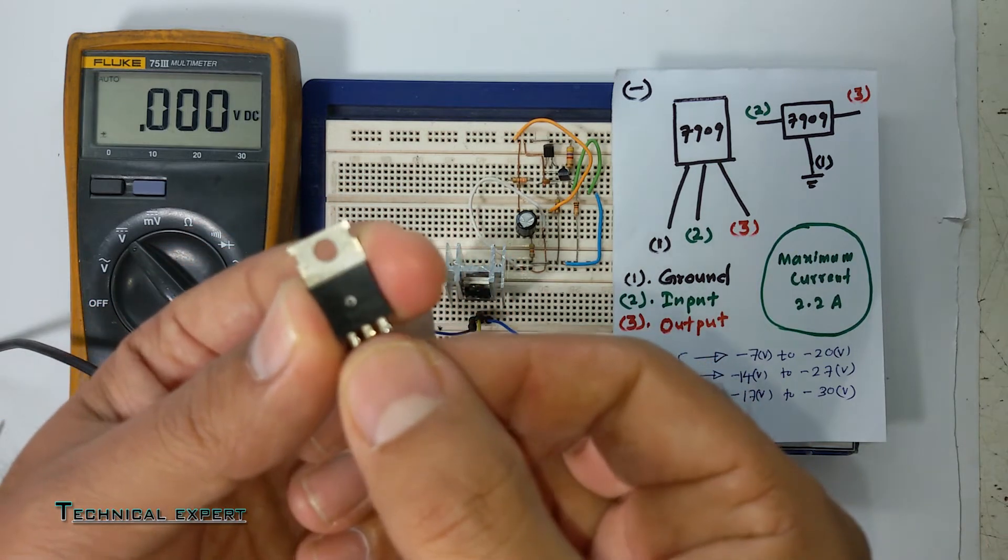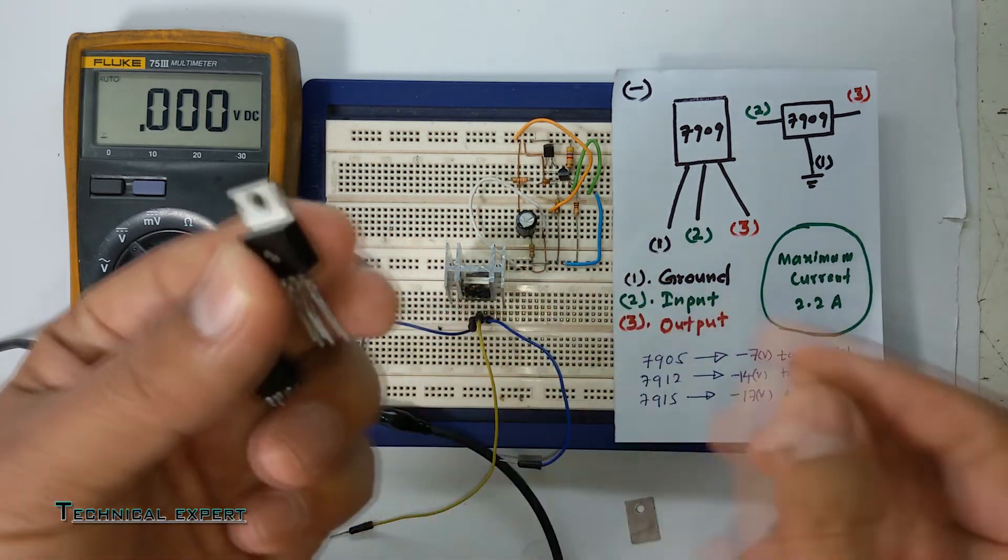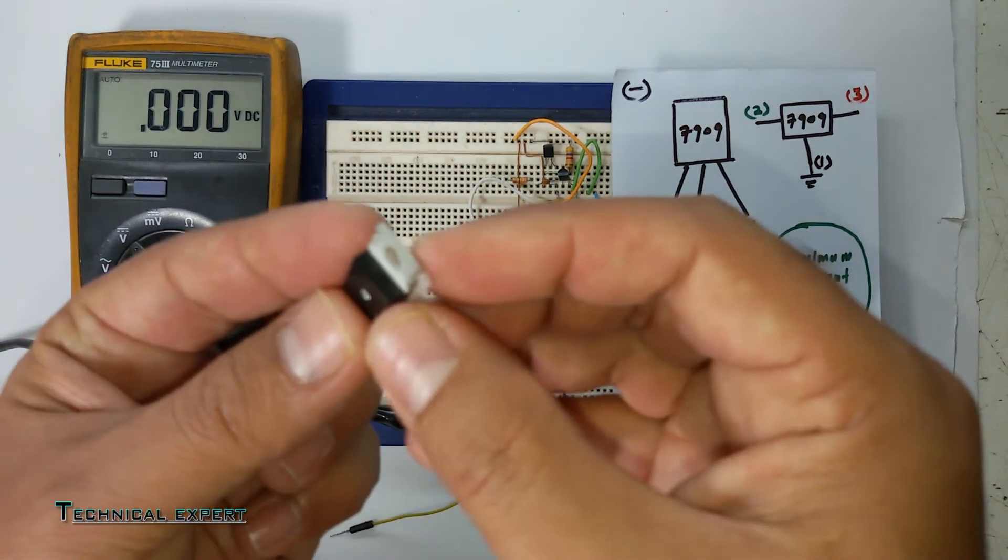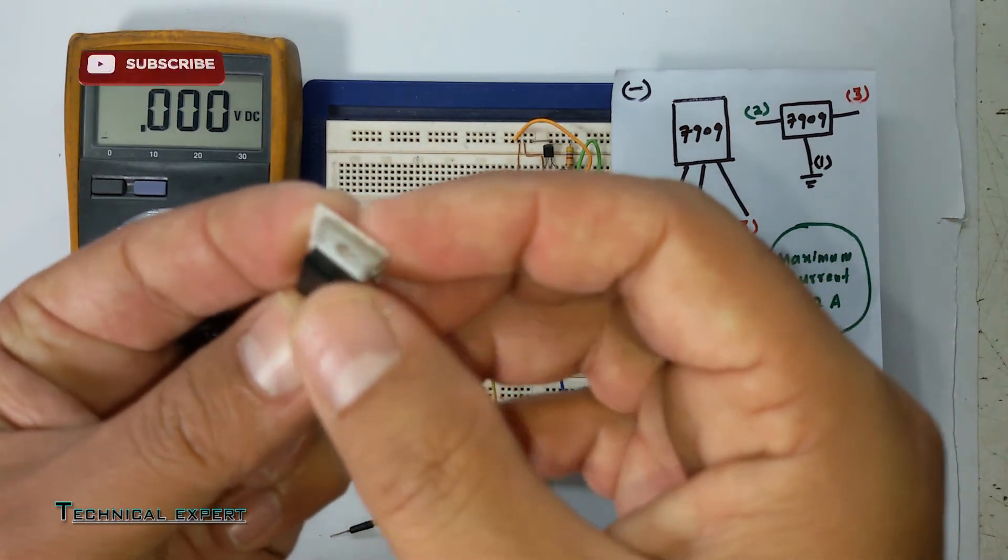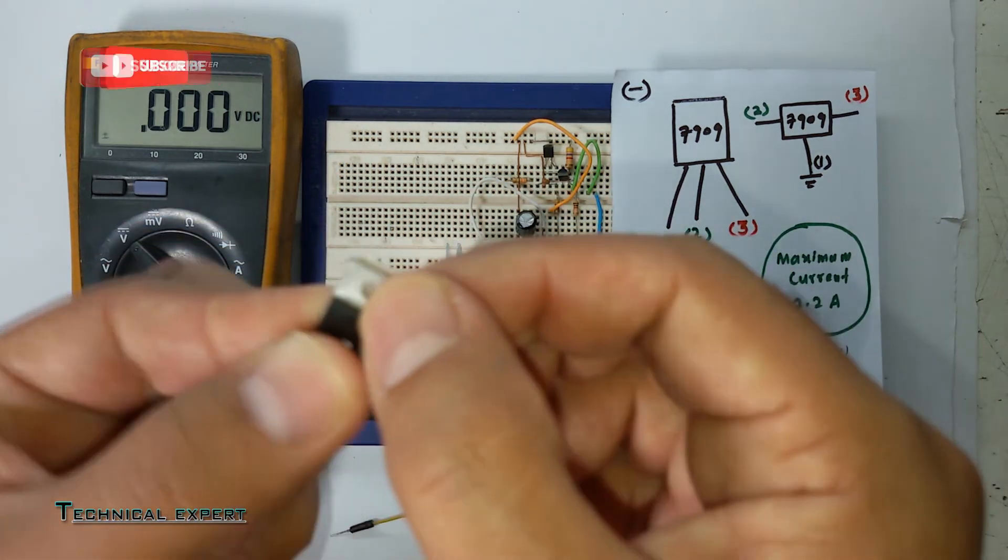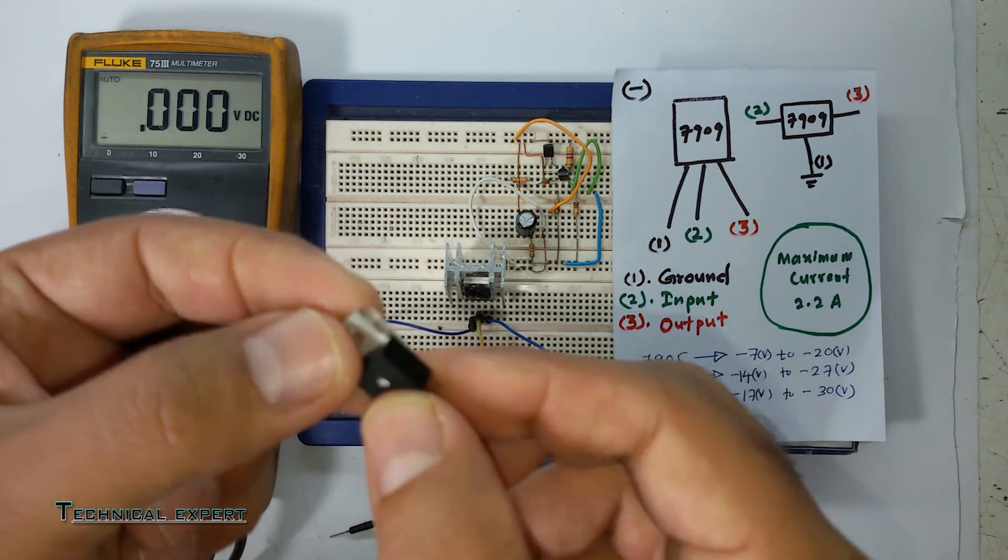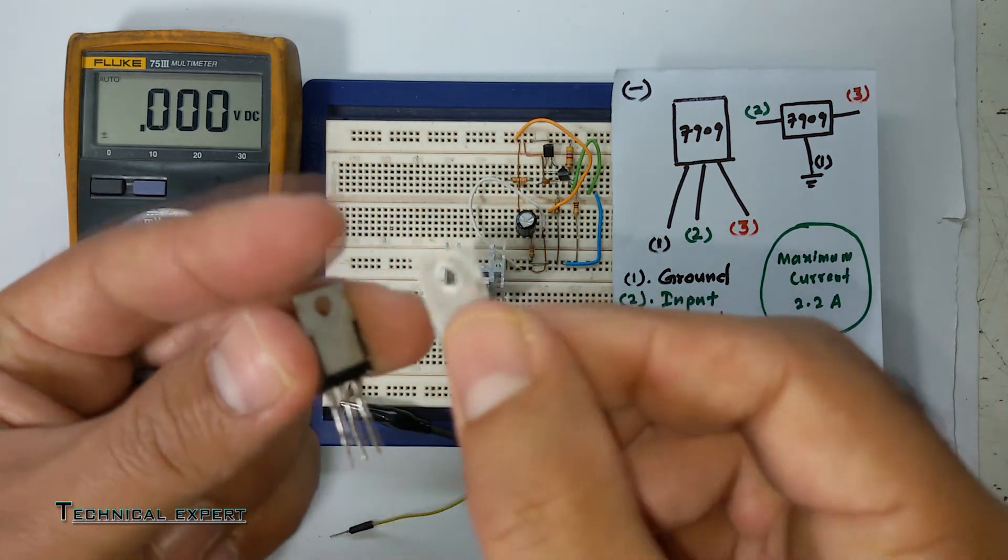Use this mica strip or mica material so it will not short your regulator to the body. The purpose of this mica is to prevent shorting your regulator to the circuit where you are using it.